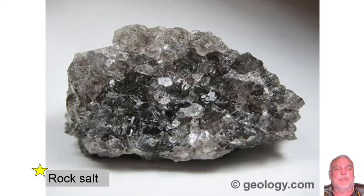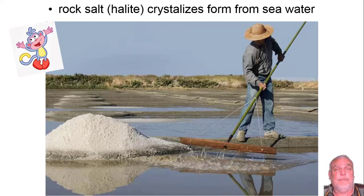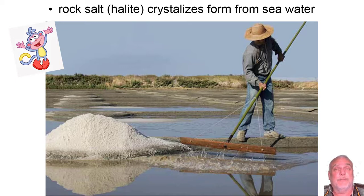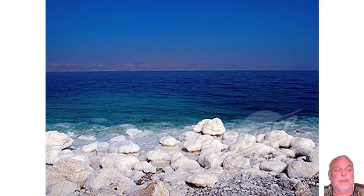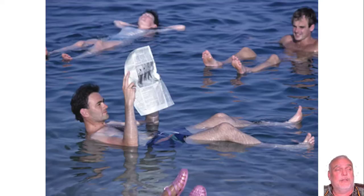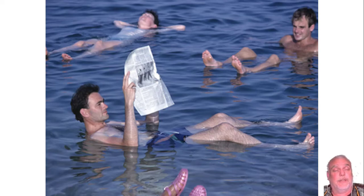Some specific examples of chemical sedimentary rock: a very common one is rock salt, sometimes called halite. Those crystals form most easily from seawater. Of course seawater is salty, and when the water evaporates it leaves a whole bunch of salt. Here you see a guy harvesting salt from ocean water that is evaporating, and here you see chunks of salt sitting on the side of the ocean. This is a photo from the Dead Sea in Israel.